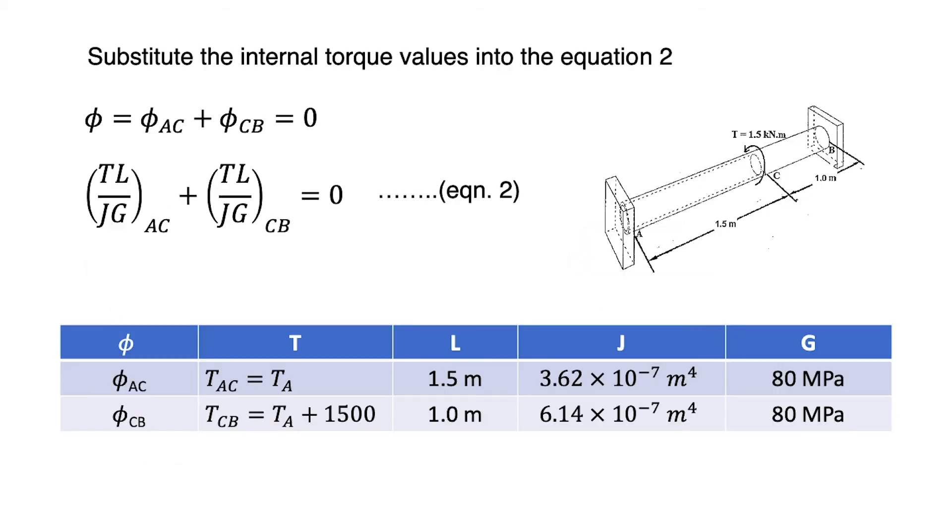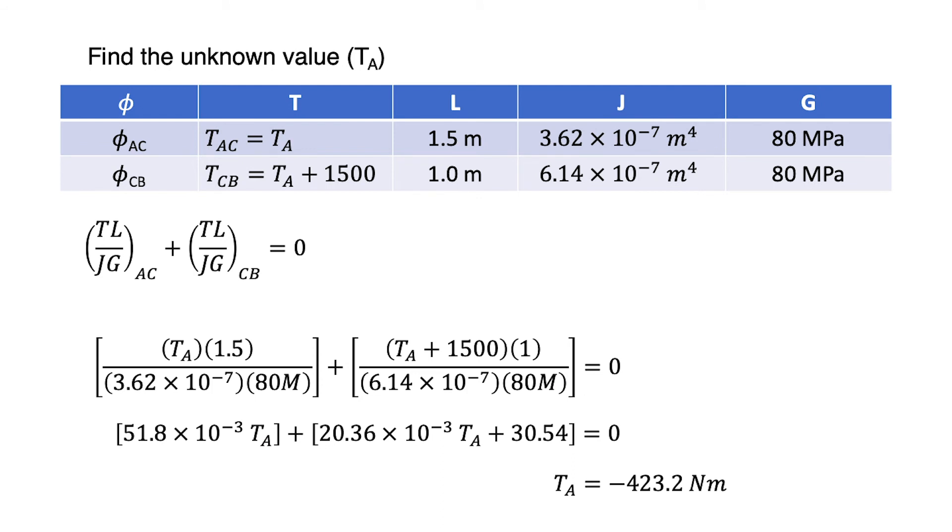Then we can put all the values in the table. For length, we just refer to the length of the shaft in the figure. Modulus of rigidity for both sections is 80 MPa. Then we substitute all the values in the table into equation 2.